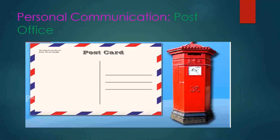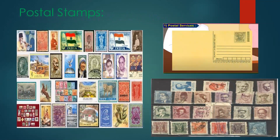The first one we are going to see is the post office. Letters and parcels are sent and received through the post office, and the cost of sending a letter is paid by buying postage stamps. These postage stamps provide us information about the culture and history of a country — our heroes, our social workers, our scientists, and so on. For urgent letters or messages, there is speed post and courier.